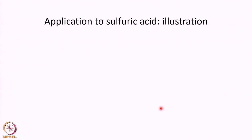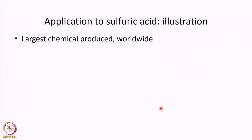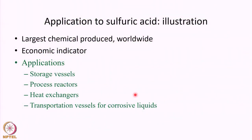Let us look at sulfuric acid, where anodic protection is very much utilized. Sulfuric acid is taken as an example because it is the largest chemical produced worldwide; in fact, how much sulfuric acid is produced is indirectly an economic indicator of a country. Anodic protection in sulfuric acid plants is applied to storage vessels, process reactors, heat exchangers, and transportation vessels for corrosive liquid — a limited but important set of applications.